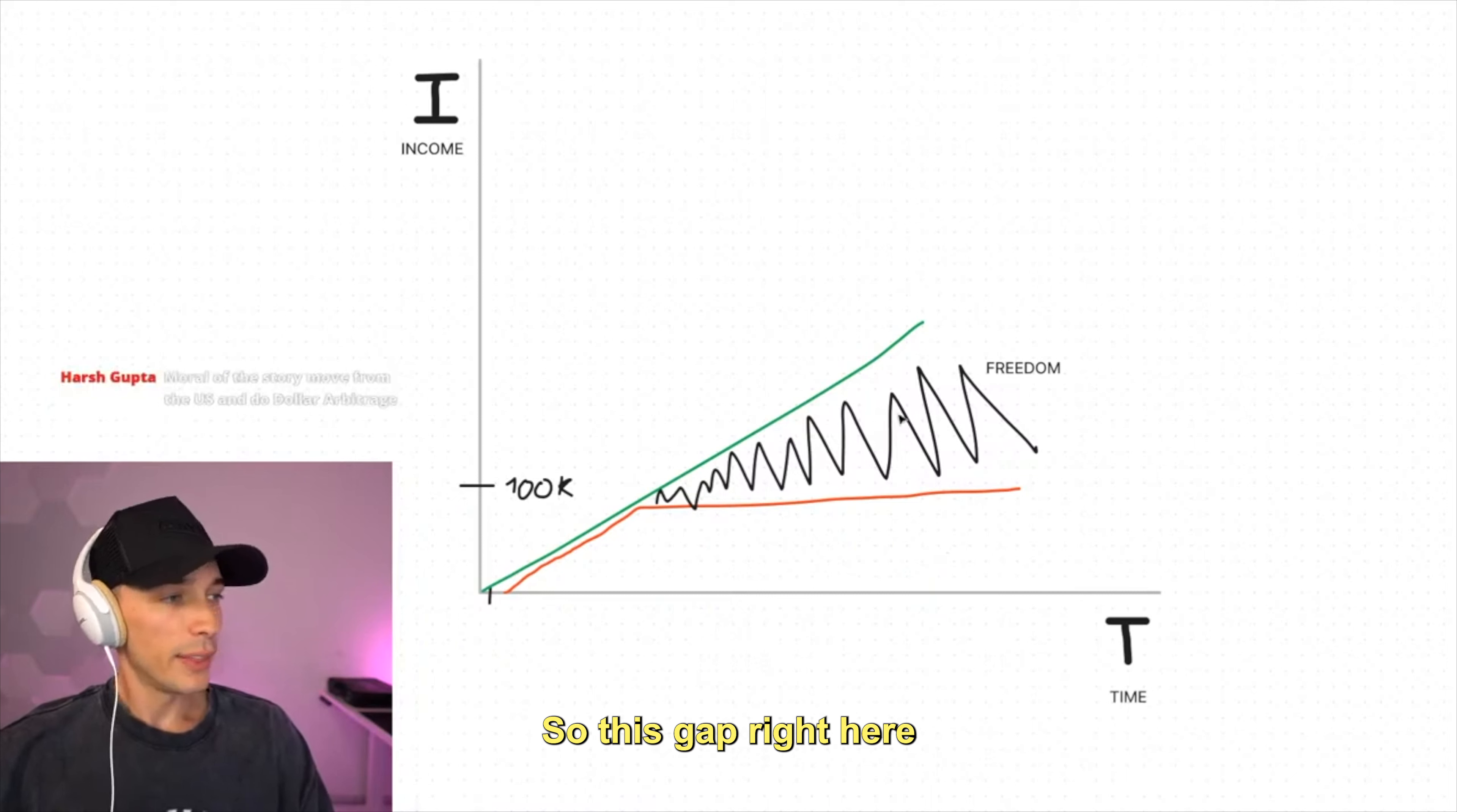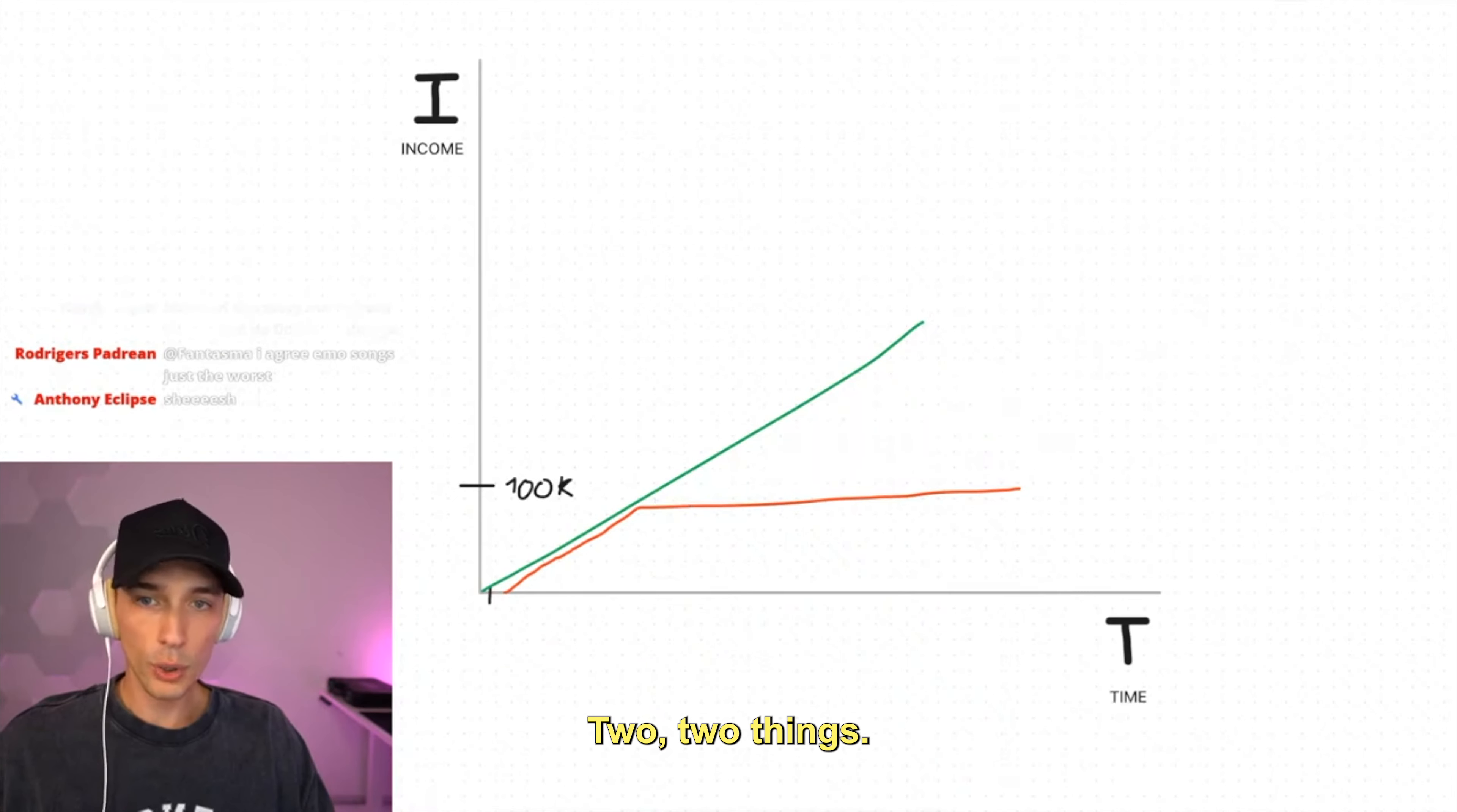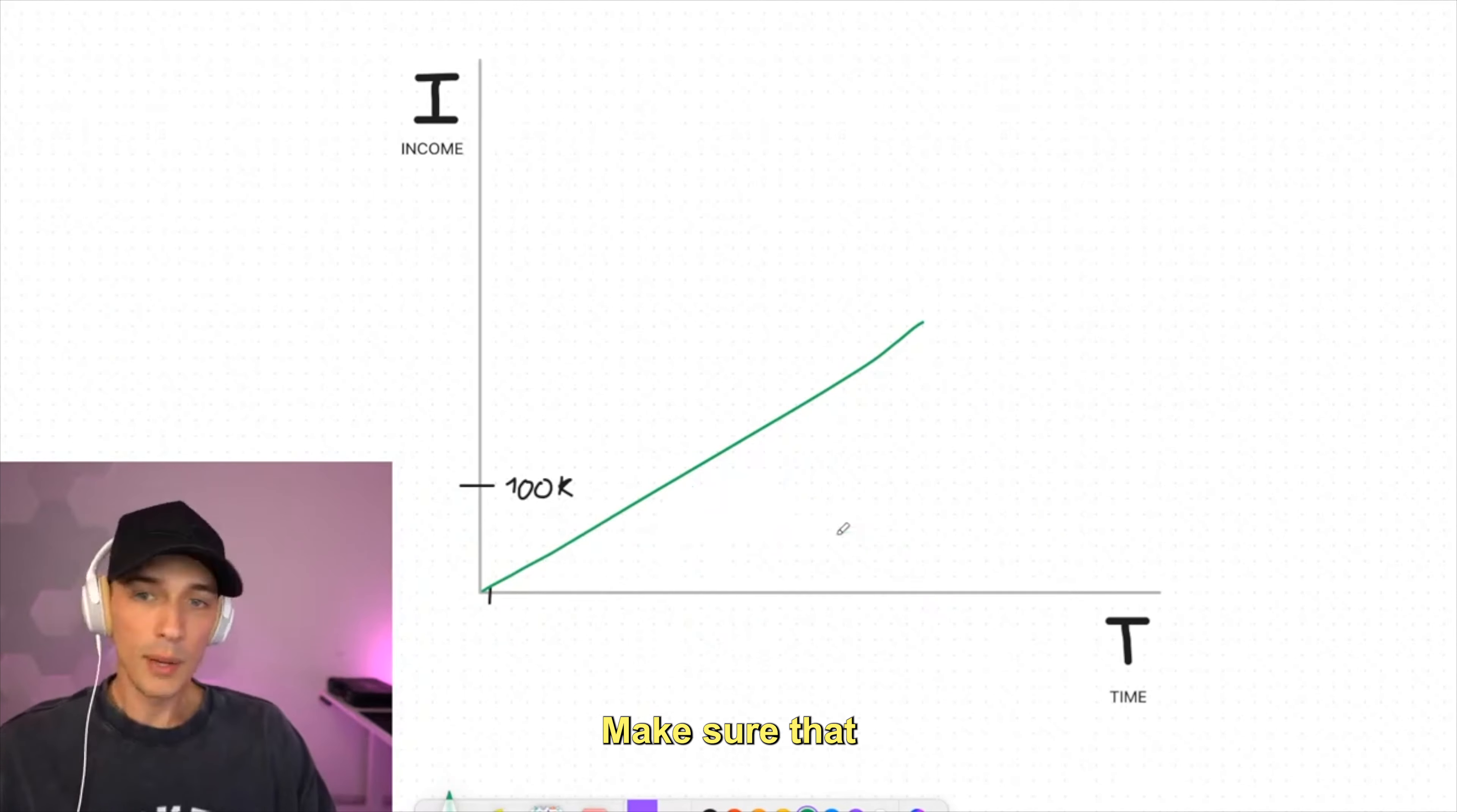So right now my current expenses in life are fixed, probably about $40 grand a month. That's between houses, between buying random shit. I don't know, $40 grand a month is what I spend. I don't like saying that number because to me it's a gross number, it's way too much. So this gap right here represents freedom. Your goal is to be doing two things simultaneously when you're getting rich: one is making sure that you're always on a steady uptrend.